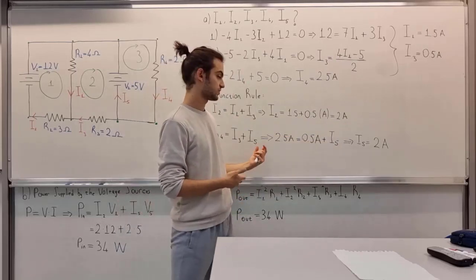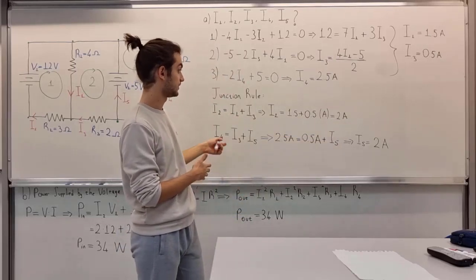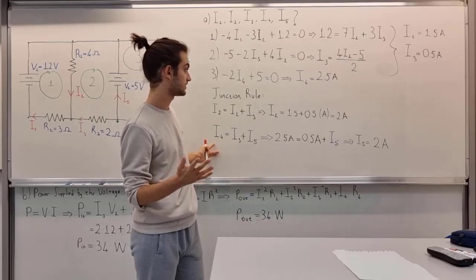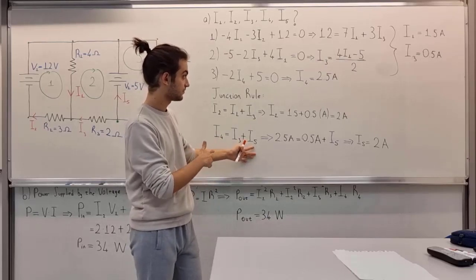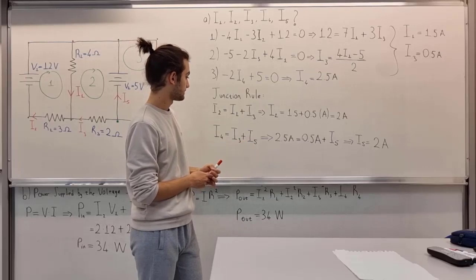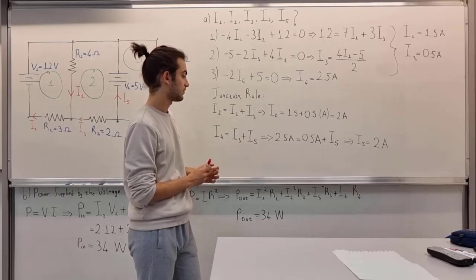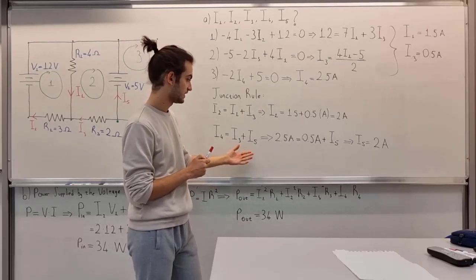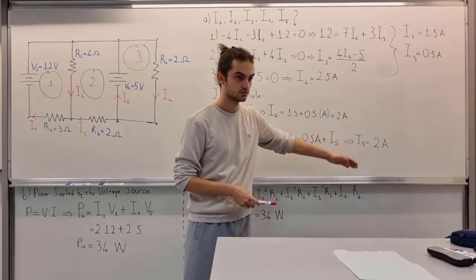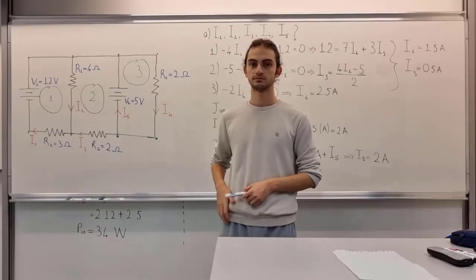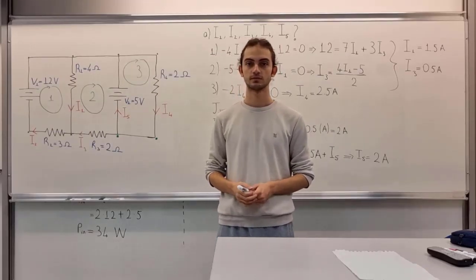And I5 is also apparent - we know what I4 is, we don't have I5, we have I3, then I5 becomes 2 amperes.